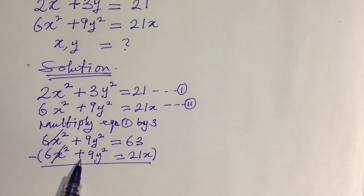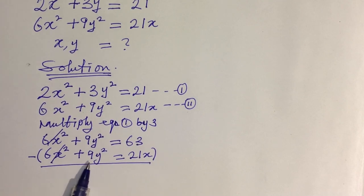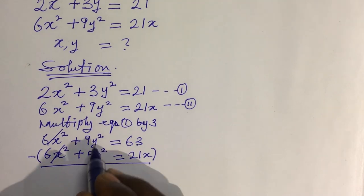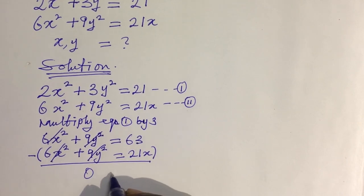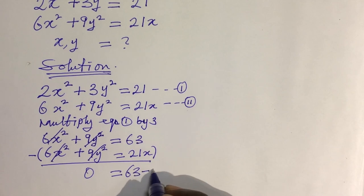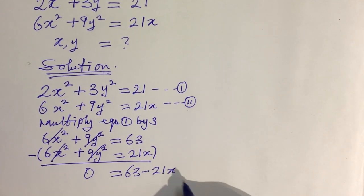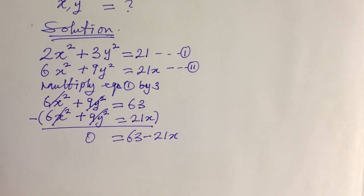Using the minus sign, 9y² − 9y² also gives zero. So on the left-hand side we are left with zero, and on the right-hand side we have 21x − 63.